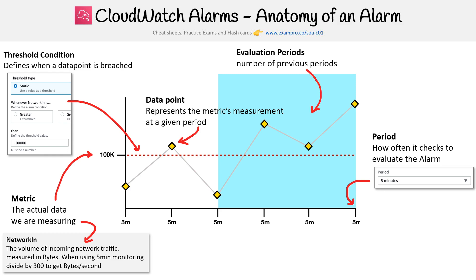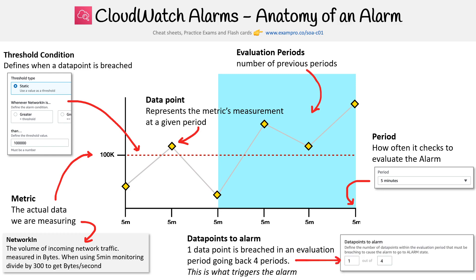Then you have the evaluation period. So this is the number of previous periods. And then you have data points to alarm. So this is for one data point is breached, an evaluation period is going to go back four periods. So this is what actually triggers the alarm that you want to pay close attention to there. So there you go.